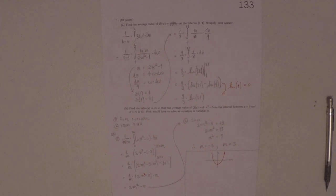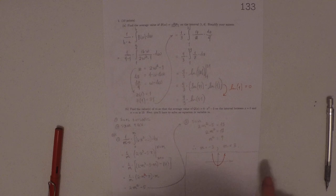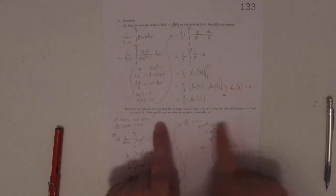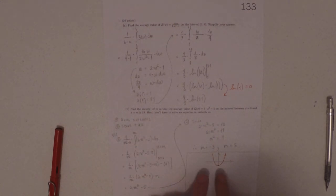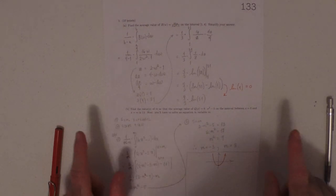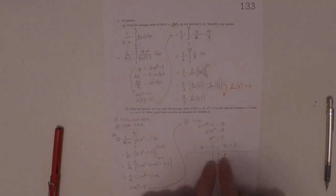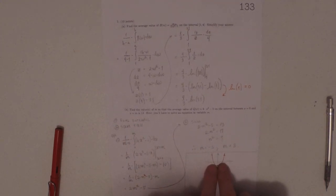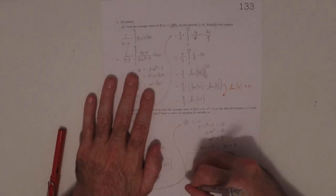And what these two are saying is that we want to compute the average value, and we want it to be 13. The average value to be 13, and we want it to be 13 between 0 and m. And because this is symmetric, if there's going to be a positive answer, then there will also be a negative answer. And they look like this.